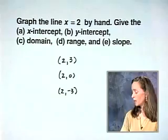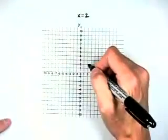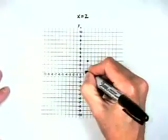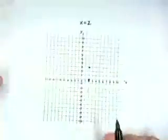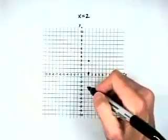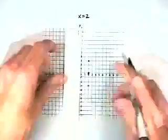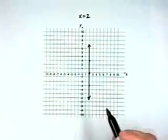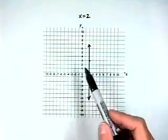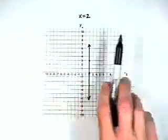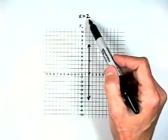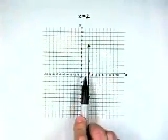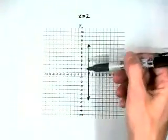We want to plot these in a coordinate system. I'll start by plotting 2, positive 3; then 2, 0 — 2 in the x direction, 0 in the y direction; and then 2, negative 3. Connecting these three points, I get the graph of a vertical line. Its x intercept is 2. It has no y intercept. Its domain is only the x value 2. Its range is all real numbers. Its slope is undefined — it moves 0 units in the x direction for any number of units in the y direction.